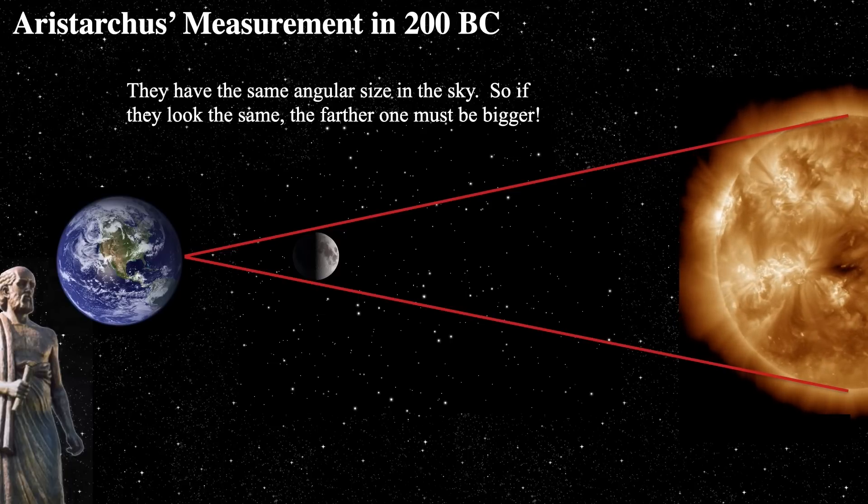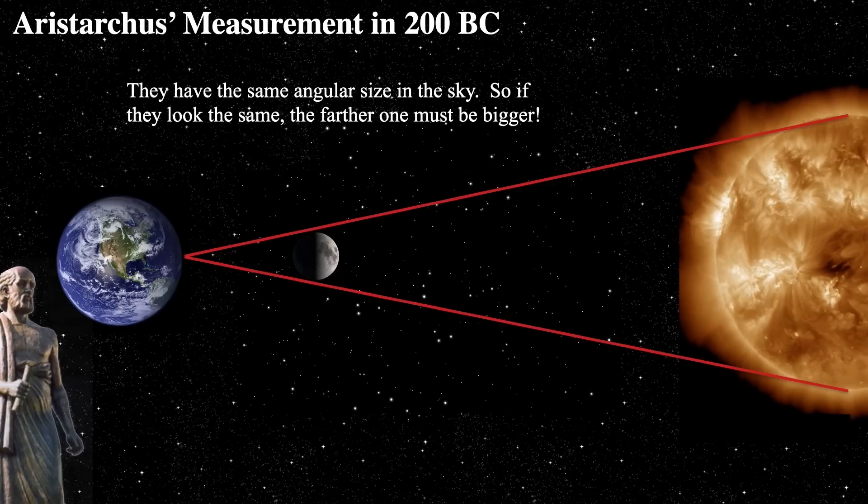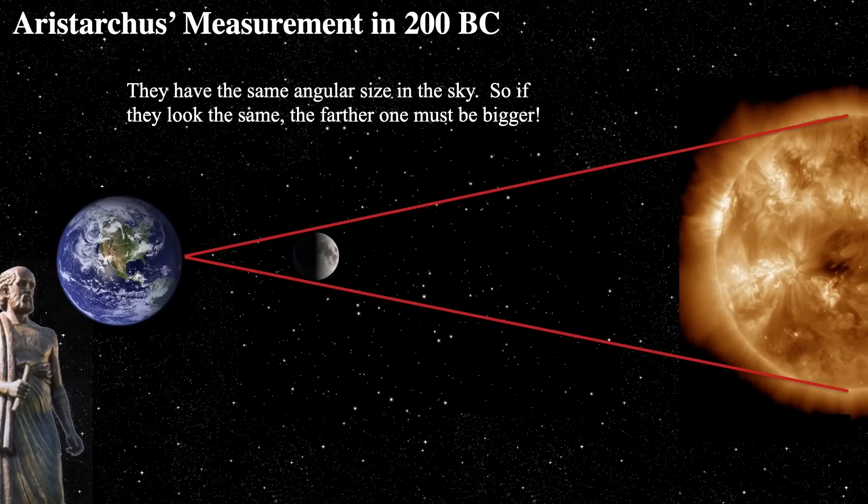if the sun is 19 times further than the moon, it has to be 19 times bigger. So that's the nature of things at the same angles across the sky. So he knew that the sun was really big. He said, well wait a second. How big's the moon?